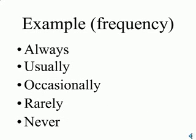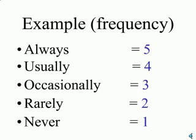Here we have an ordinal scale measuring the frequency that a subject does something: always, usually, occasionally, rarely, or never. The more frequent the variable, the more points we give — one point for never, two for rarely, three for occasionally, four for usually, and five for always.